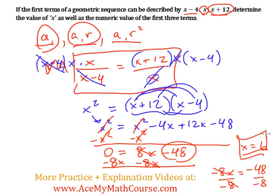So now that we have found x, we can find the numeric values of the first three terms. The first one will be 6 minus 4, which is 2. The second term is just x, which is 6. And the third term will be x plus 12, so 6 plus 12, which is 18. That's it.